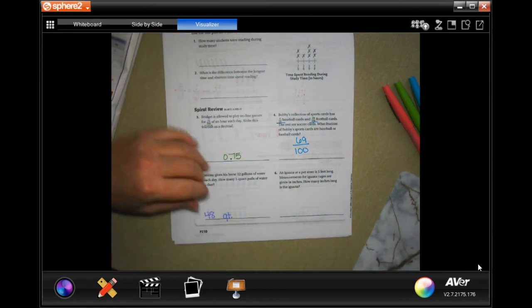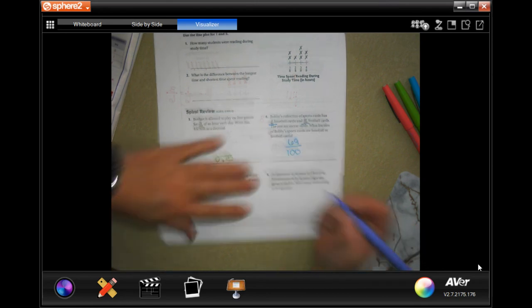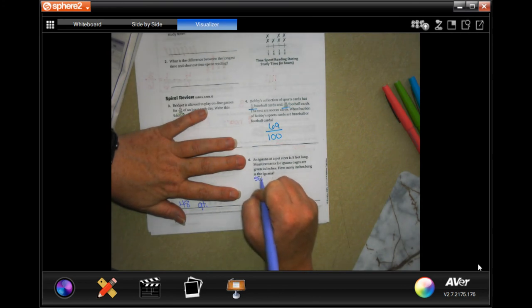An iguana at the pet store is five feet long. Measurements for the iguana cages are given in inches. How many inches long is the iguana? All right, so what we got to do here, ready? Five feet.